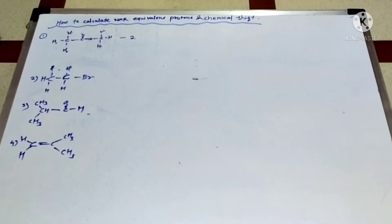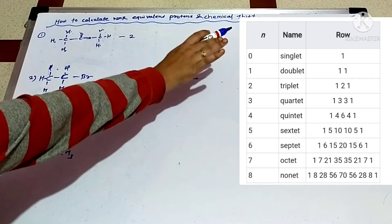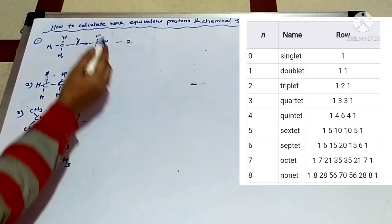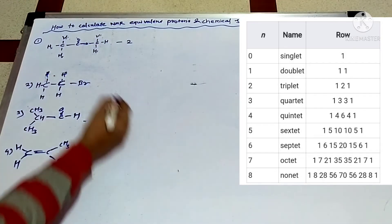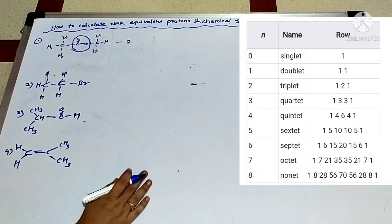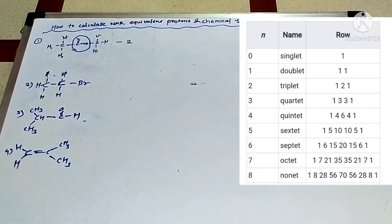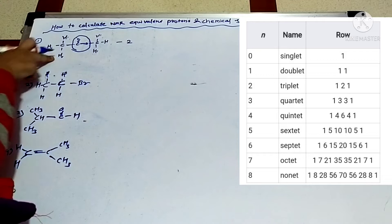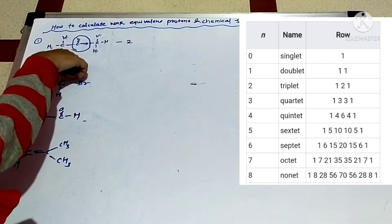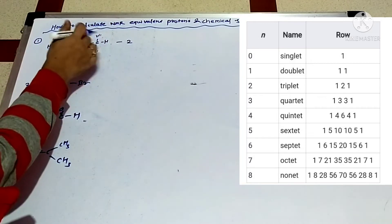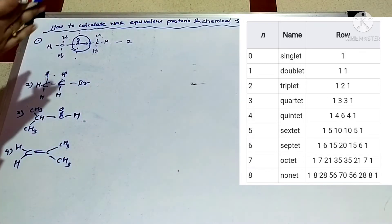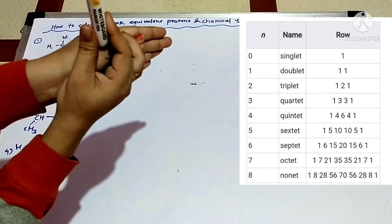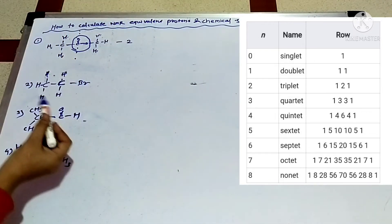Let's see how to calculate NMR equivalent protons and chemical shift. First example: there is an ester group — CS3-O-O-CS3. At the center is the ester group C double bond O-O. Both CS3 sides are the same, and C double bond O is in the center.